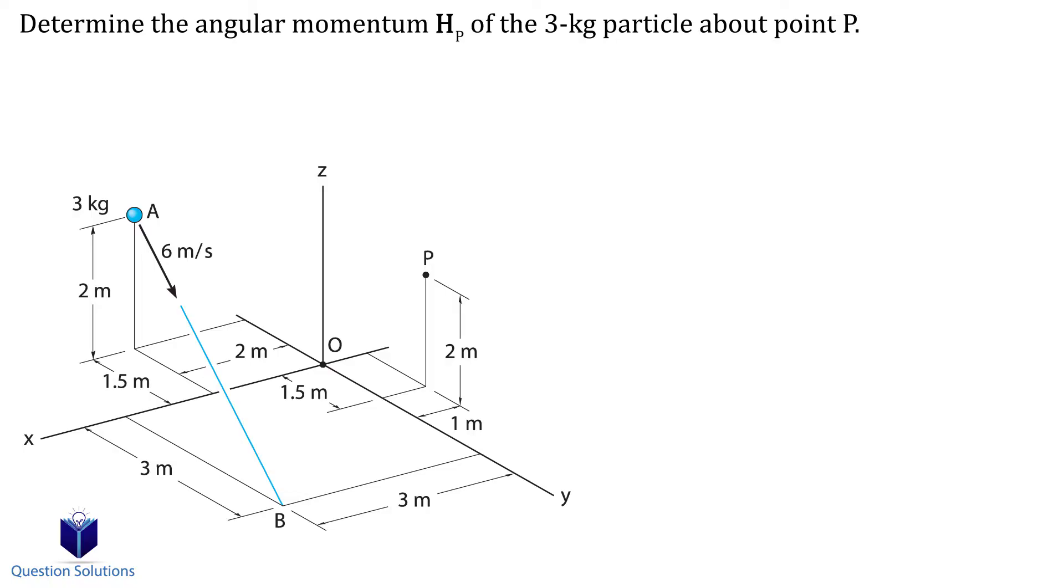So for the starting location of the particle, we see that it's at 2i, negative 1.5j plus 2k. For the location of point P, we see that it's at negative 1i plus 1.5j plus 2k.